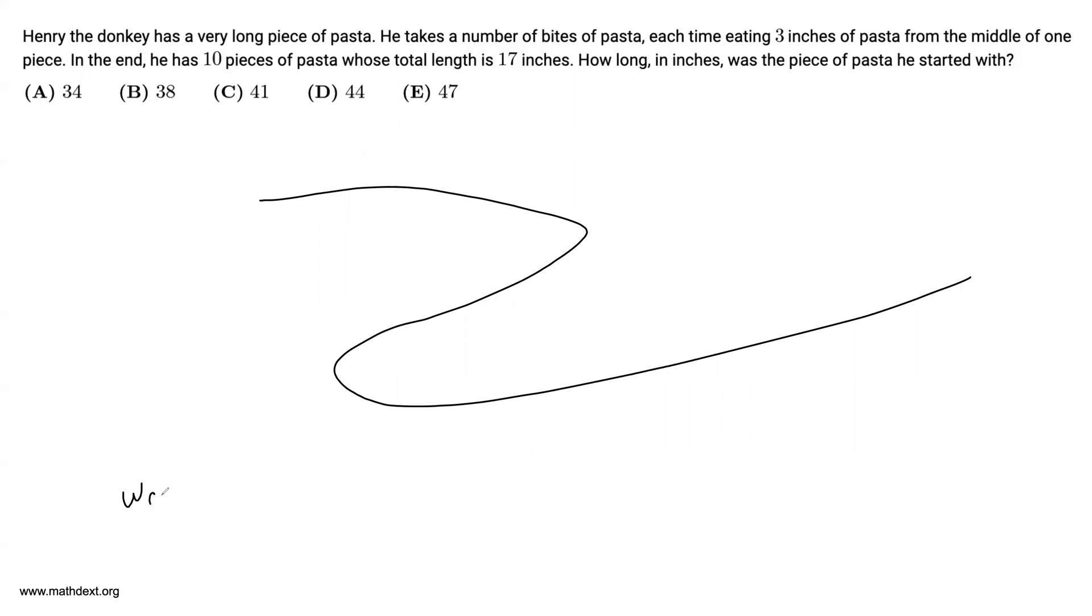What we want, what he started with, is equal to what he ate plus what he didn't eat. Okay, so this is going to give us the length of the piece of pasta before he ate some of it. And this is pretty intuitive because for every chunk of the pasta, he either ate it or he didn't. So this should make sense.